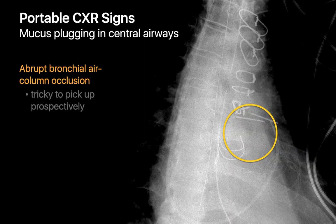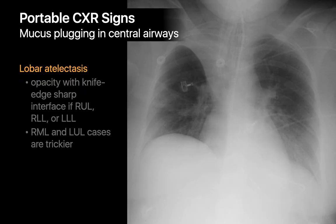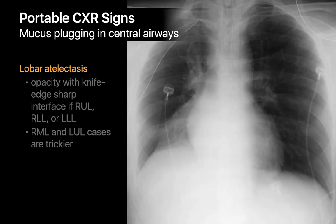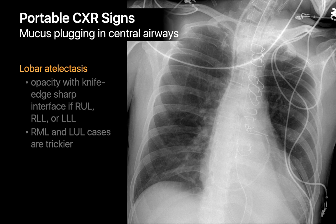With mucus plugging in the central airways, abrupt cutoff of the bronchial air column might be visible, but tends to be challenging to pick up prospectively, particularly on portable chest x-rays where technique may not be ideal. You're much more likely to detect mucus plugging by recognizing obstructive lobar atelectasis. Right upper, right lower, and left lower lobar obstructive atelectasis are the easiest to identify — look for a homogeneous region of densely opacified lung with a sharp knife-edge interface, as seen in cases of right upper, right lower, and left lower lobar atelectasis.